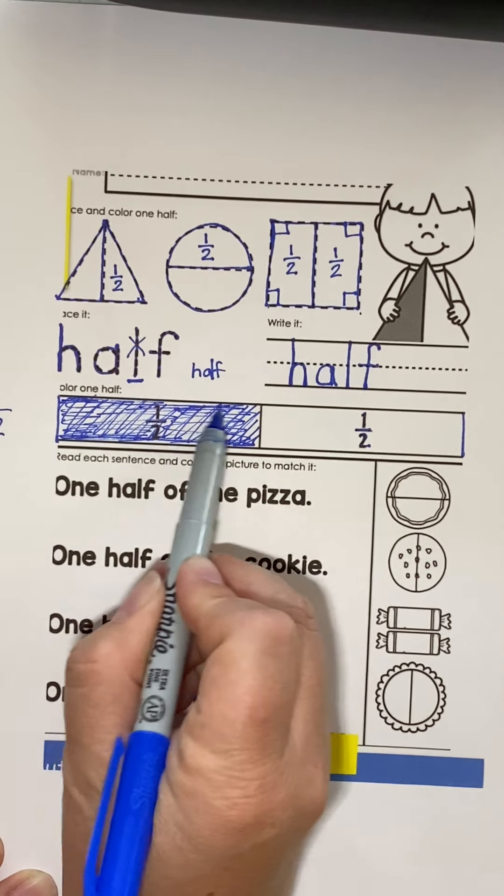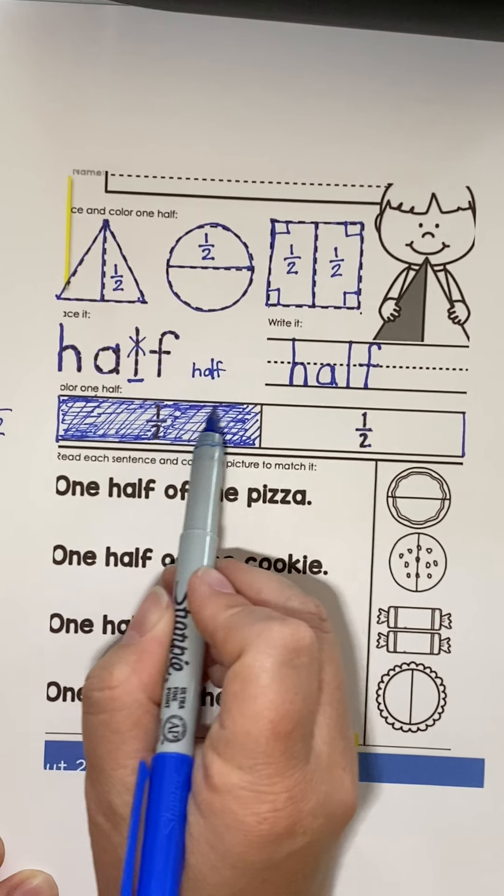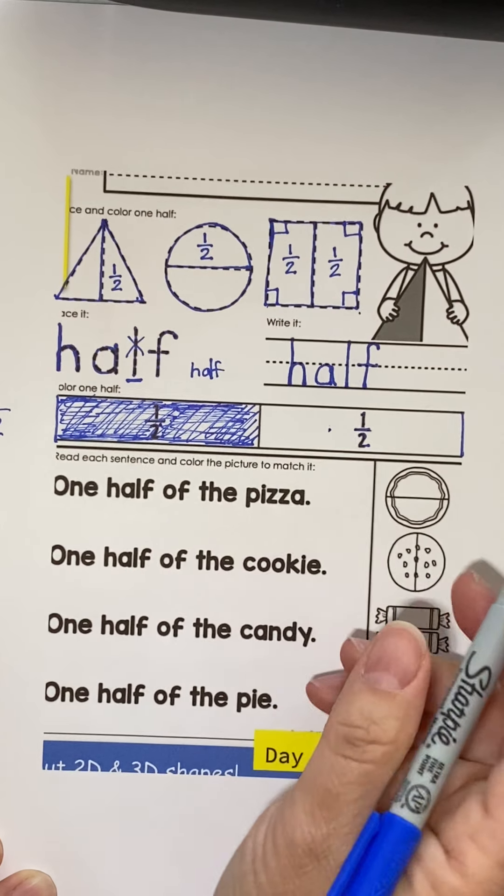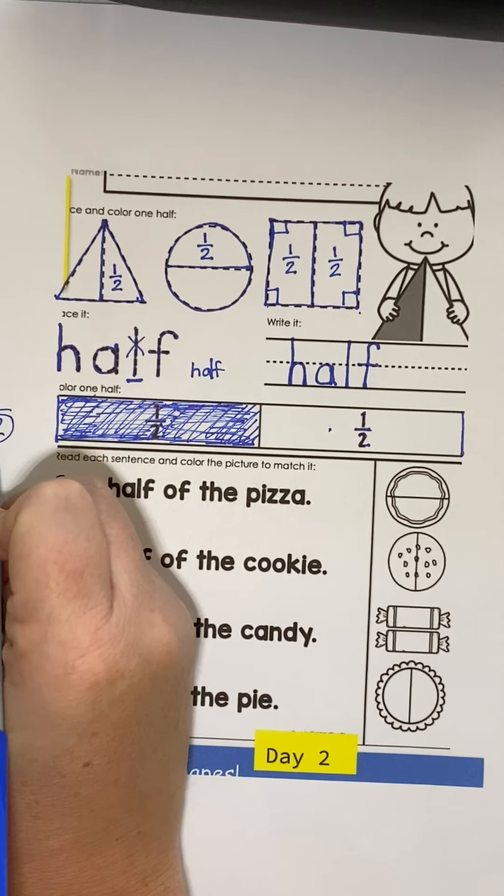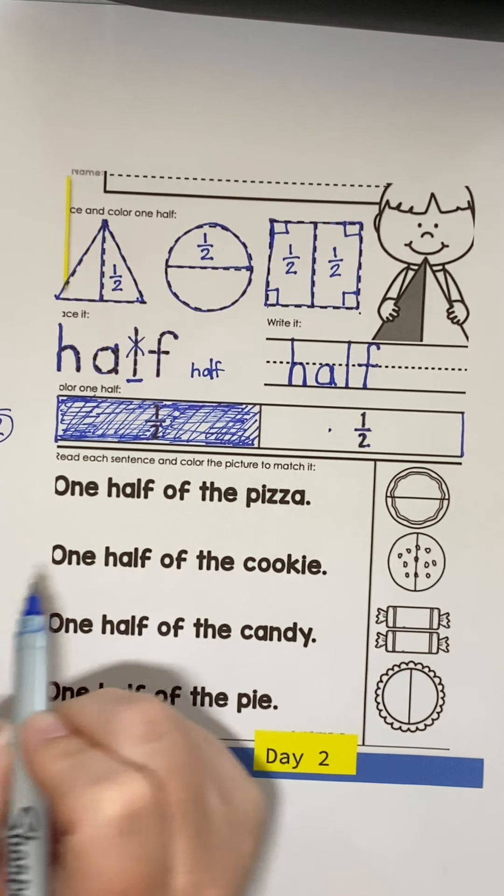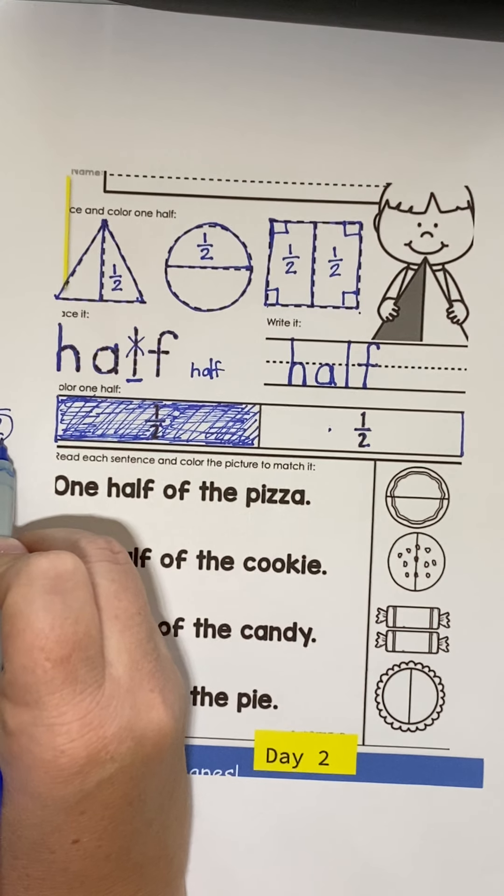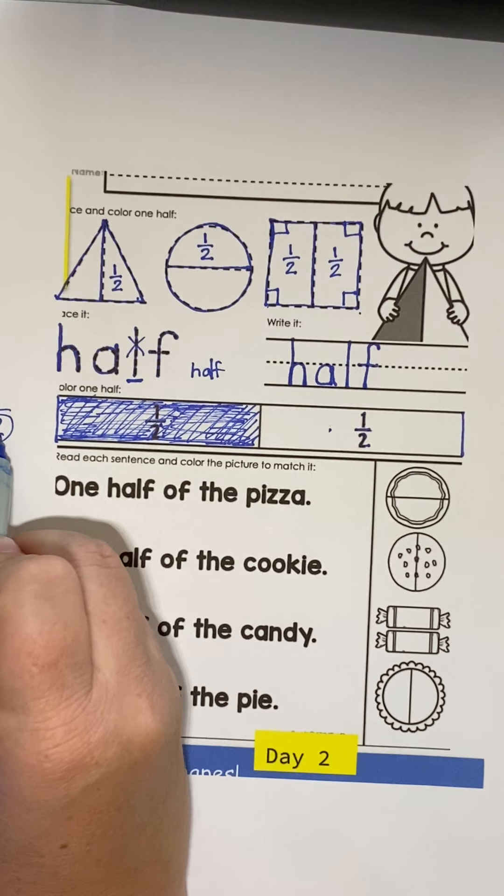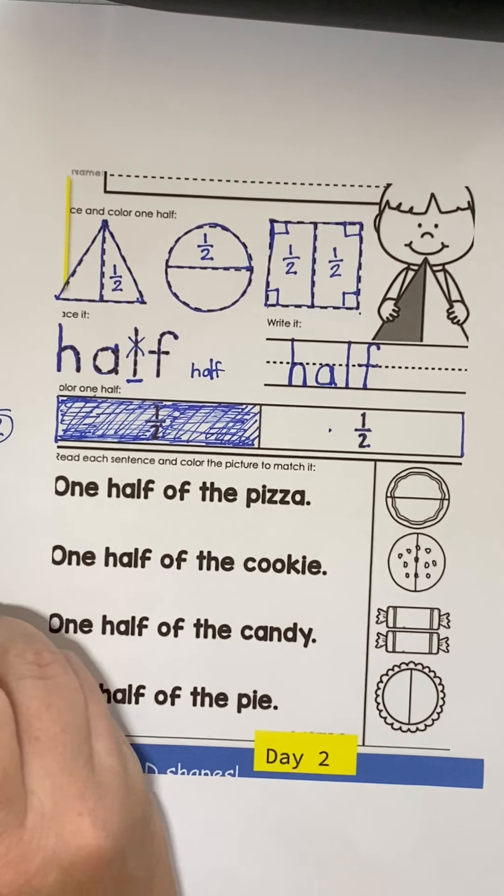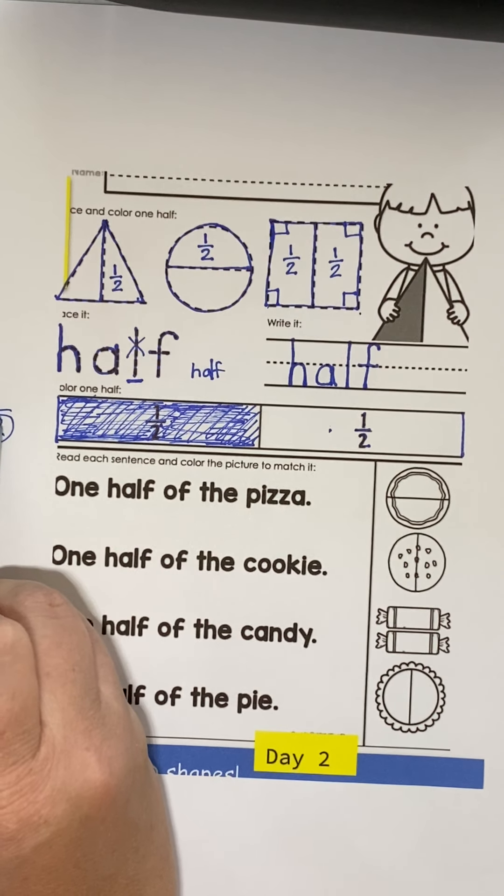So, this side is colored in. There's one part colored in out of one, two equal pieces. So, when we're talking about it, the number on the bottom is called the denominator. That tells us how many equal pieces there are. The number on the top tells us how many pieces are colored in.